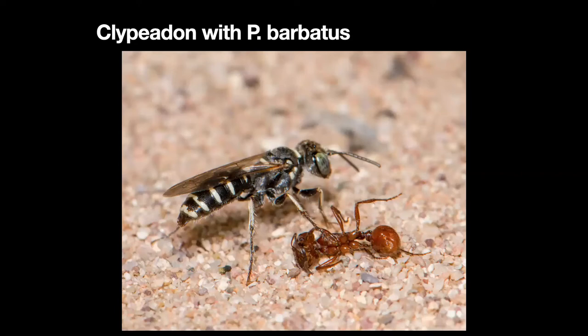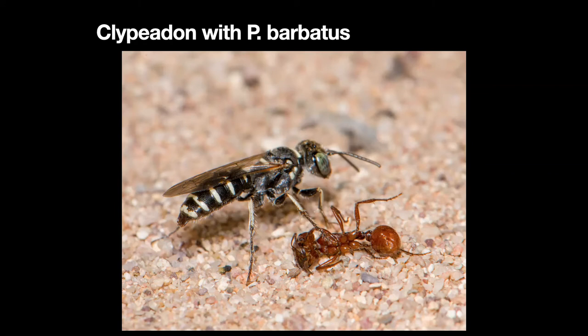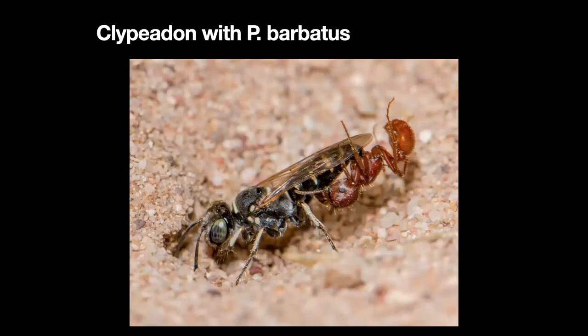Here we have a wasp, Clypeadon, with a worker Pogonomyrmex barbatus. These wasps prey upon these ants — placing 16 to 26 ants in a cell (called mass provisioning) and laying one egg on them, then making more than one cell. At the tail end you can see the terminal segments of the abdomen are highly modified — it has evolved what is called an ant clamp. It inserts that clamp between the bases of the ant's legs so all six of the wasp's legs are free to carry the ant into the nest.